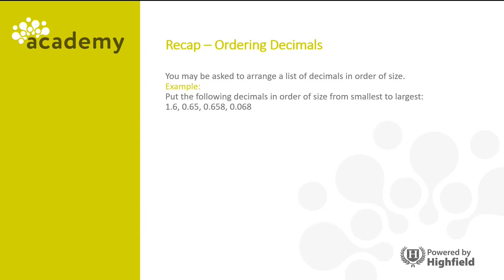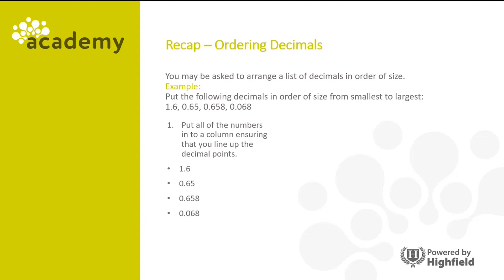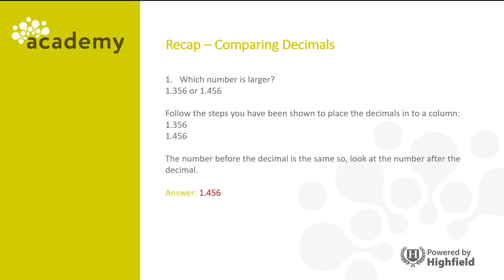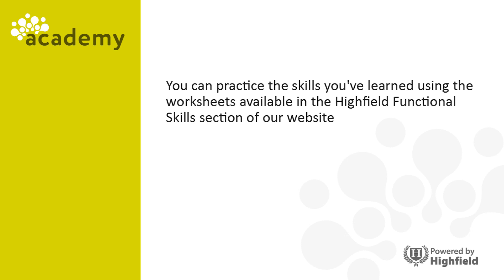You may be asked to arrange a list of decimals in order of size. Remember, the first step is putting the numbers into a column, ensuring you line up the decimal points. The second step is to look for the number before the decimal point and arrange from smallest to largest. The third step is if any of the digits are the same, move on to the digits after the decimal point. Which number is larger, 1.356 or 1.456? Follow the steps to place the decimals into a column and it's clear that 1.456 is larger. Thanks for participating and I'll see you on the next session.